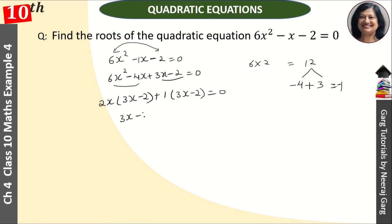So here it is 2x + 1, giving us (3x - 2)(2x + 1) = 0.